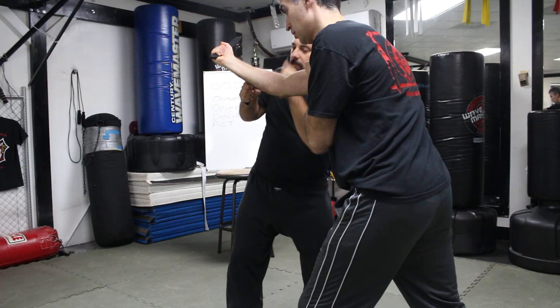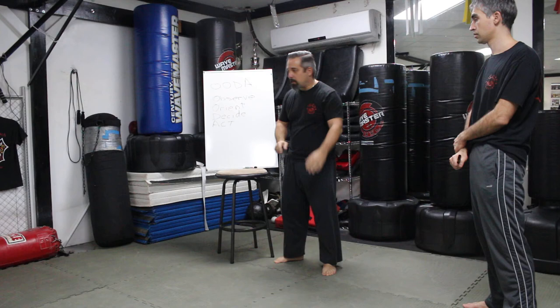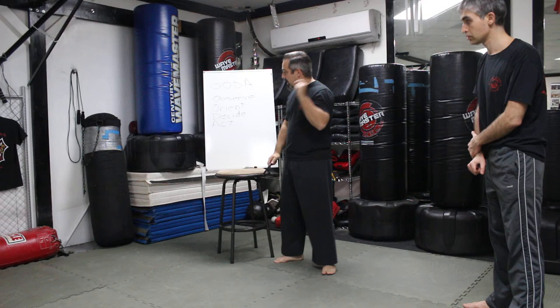I threw it at him. What did he do? He moved that way too. And when he placed his arm, I moved away from his arm and then I cut. But that subtle use of footwork is what's causing him to go back into the orientation phase of this loop.